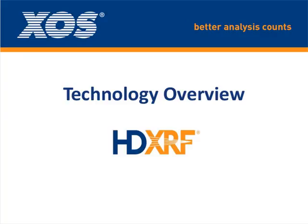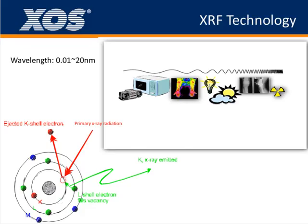Okay, first a technology overview: HD-XRF means high definition X-ray fluorescence. First of all, what is X-ray? X-ray is a kind of wavelength from 0.01 to 20 nanometers. We can commonly see X-rays in our daily life — like sometimes we need to go to the hospital to check X-rays of our body, and that is the same X-ray we are using.